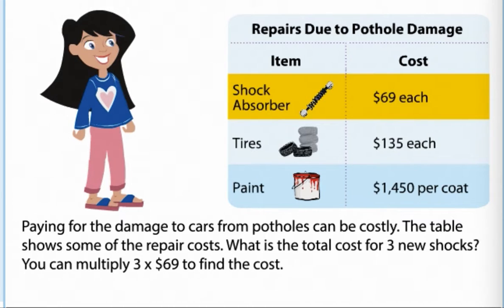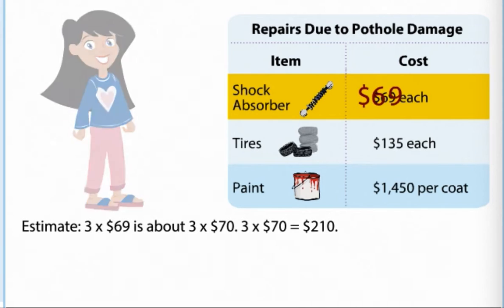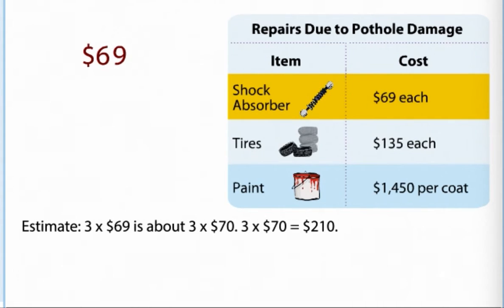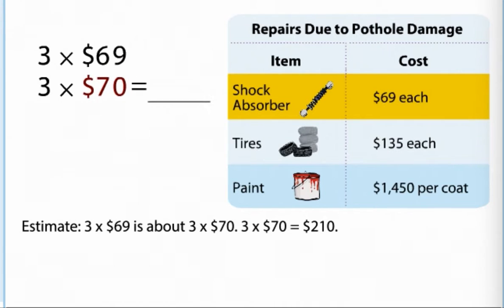What is the total cost for three new shocks? You can multiply 3 times $69 to find the cost. Estimate: 3 times $69 is about 3 times $70. 3 times $70 equals $210.